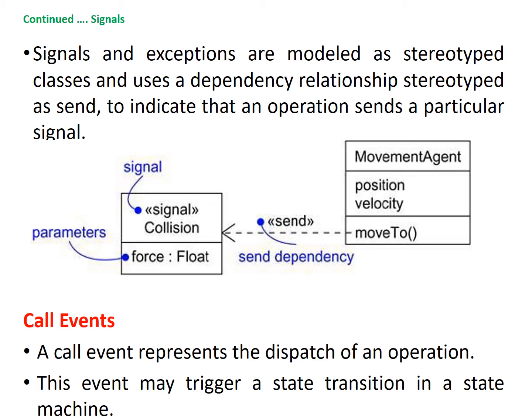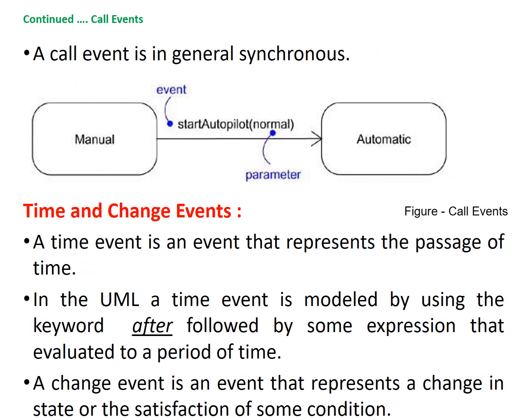A call event represents the dispatch of an operation. This event may trigger a state transition in a state machine. The call event is, in general, synchronous. This means that when an object invokes an operation on another object that has a state machine, control passes from the sender to the receiver. The transition is triggered by the event, the operation is completed, the receiver transitions to a new state, and control returns to the sender. The figure shows a change in state from manual to automatic after passing the signal called start autopilot.